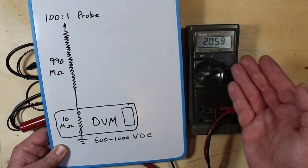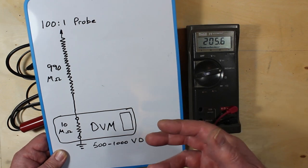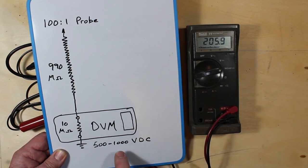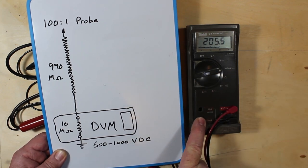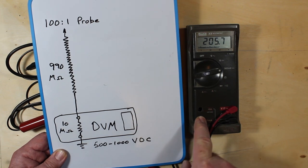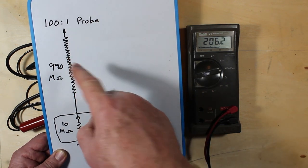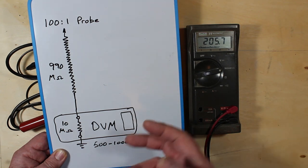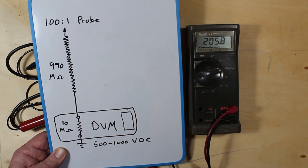And obviously be very careful if you're going to be measuring any of these sorts of voltages. Now this meter is made so that it can handle 1,000 volts. So 1,000 times 100 does not mean that you can safely measure 100,000 volts.